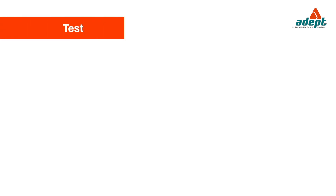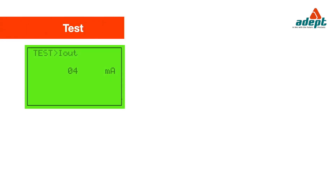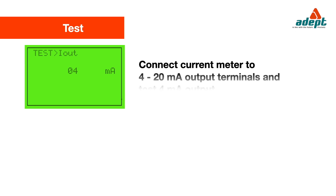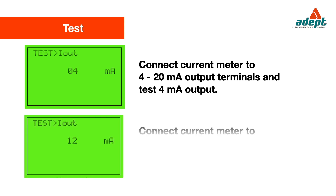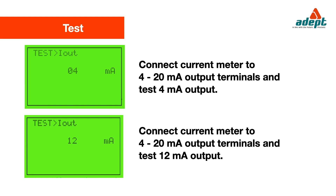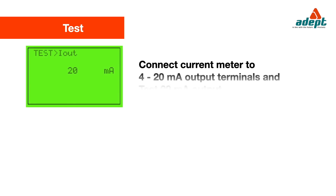Test: Connect a current meter to the 4 to 20 mA output terminals and test the 4 mA output. Connect a current meter to the 4 to 20 mA output terminals and test the 12 mA output. Connect a current meter to the 4 to 20 mA output terminals and test the 20 mA output.